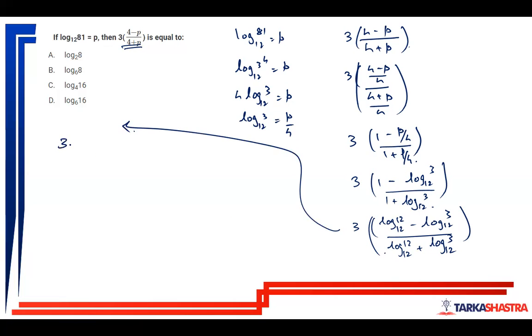So we can write it something like this. So this is 3 into log 12 by 3 to the base 12. So log 36 to the base 12, which is nothing but log 4 to the base 36.